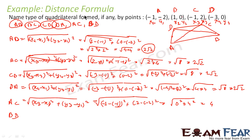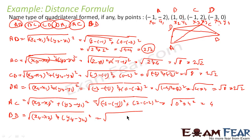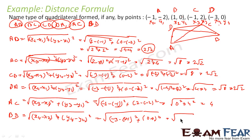Similarly, we will find BD, the distance between B and D, using x2, x4 and y2, y4. That is root of (x4 minus x2) squared plus (y4 minus y2) squared. x4 is minus 3 and x2 is minus 1, y4 is 0 and y2 is 0. So this becomes root of (minus 3 minus minus 1) squared plus (0 minus 0) squared, which is root of minus 4 squared, that is root of 16, that is 4.